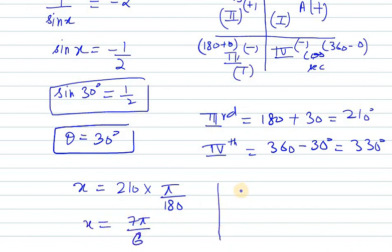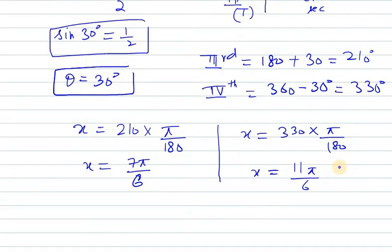The second value is x equals 330 into pi over 180. If we reduce this we get 11 pi over 6. So these are the principal solutions.